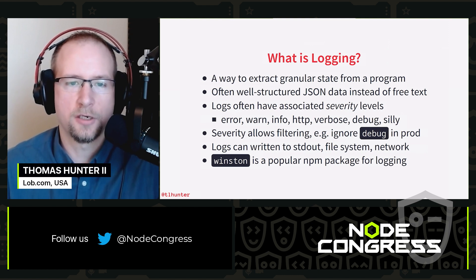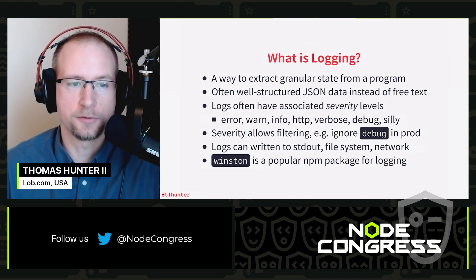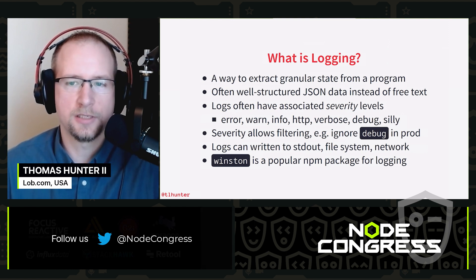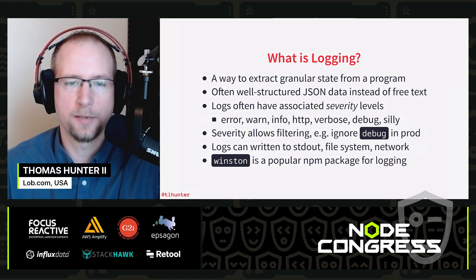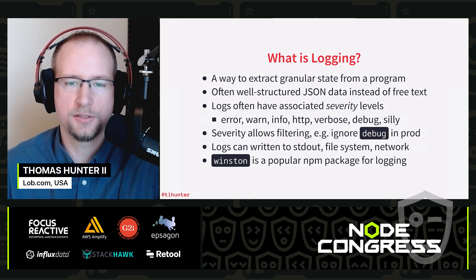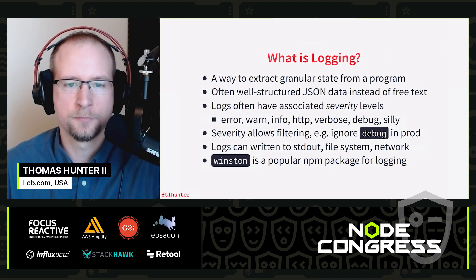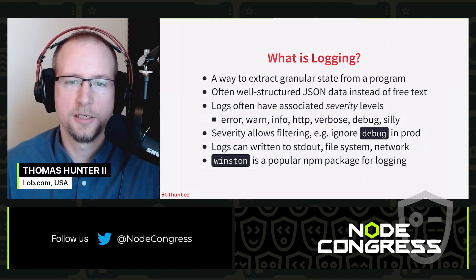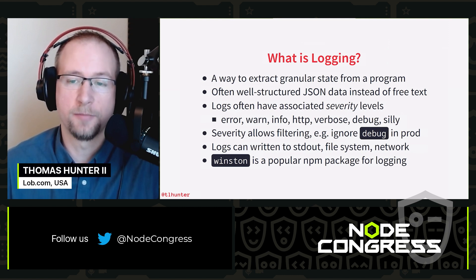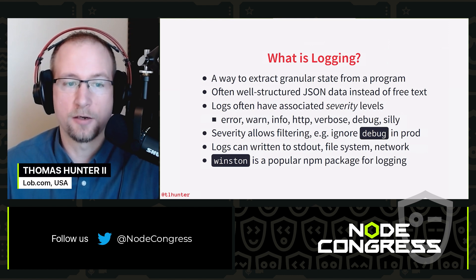These logs often have an associated severity level, which is used for filtering. The severity levels made popular by NPM are: error, warn, info, HTTP, verbose, debug, and silly. You can configure an application so that in production you're only getting messages with greater severity than debug, whereas locally you're getting all messages.